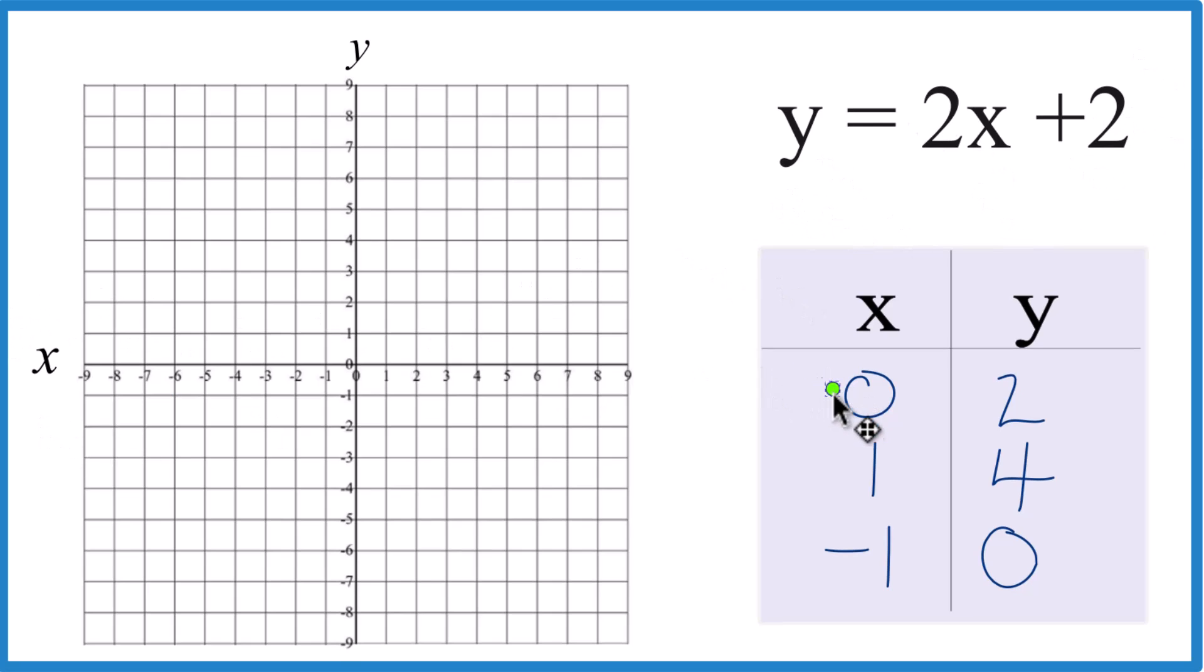So we have x is 0, y is 2. That's our first point. x is 1, y is 4.